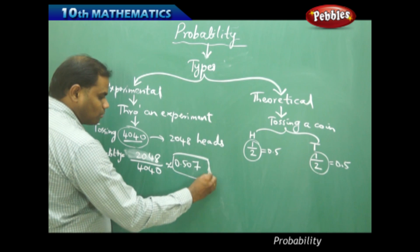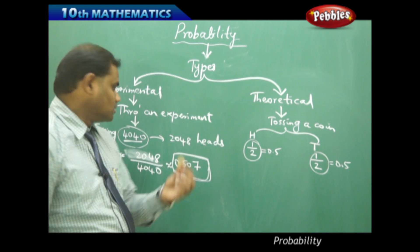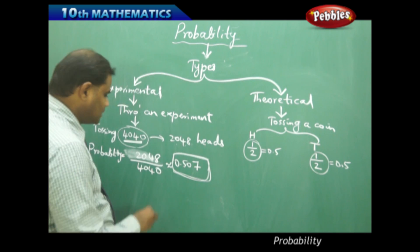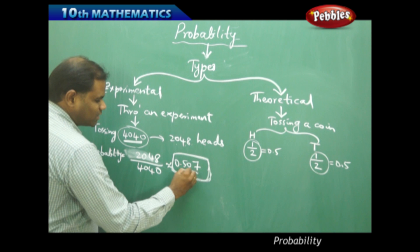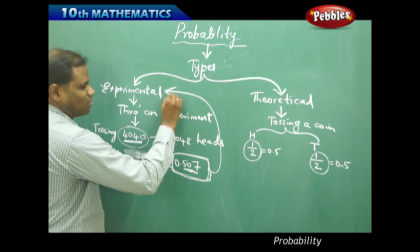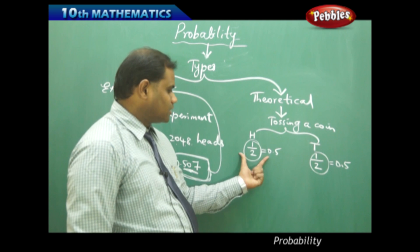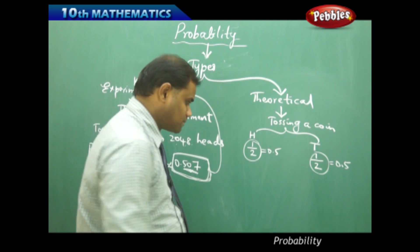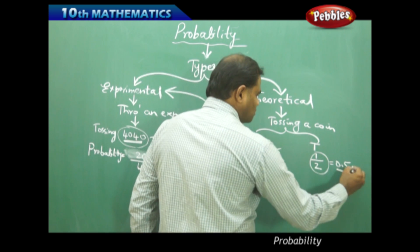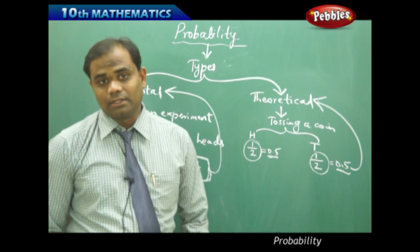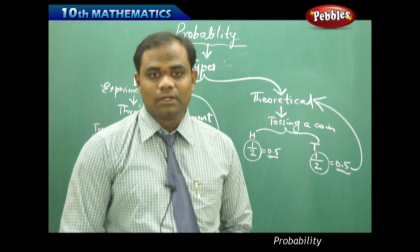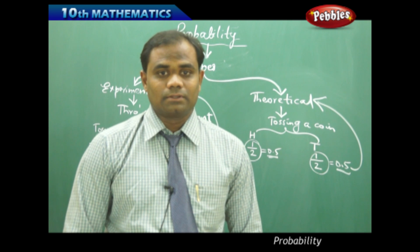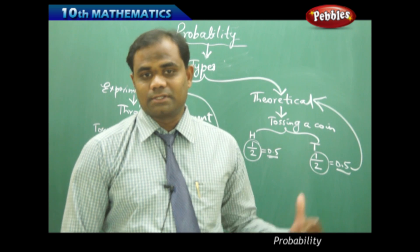So experimental probability of the same coin tossed 4040 times giving 2048 heads yields a probability of 0.507, while theoretical probability gives us one head out of two possibilities and one tail out of two possibilities — both equal to 0.5. This is how we differentiate between experimental and theoretical probability.